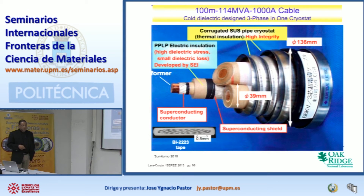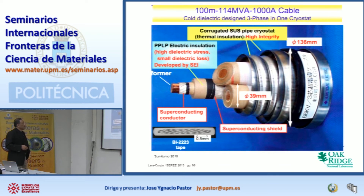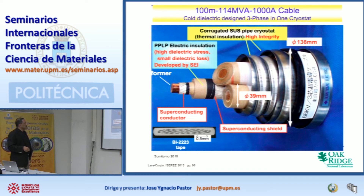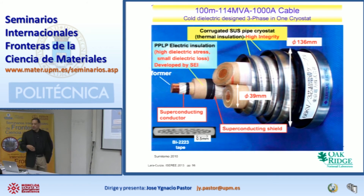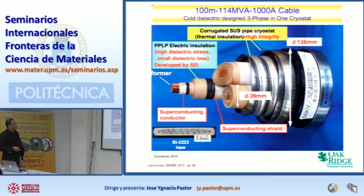Something I believe we will see in the near future is superconducting cables. In a superconducting cable cross-section, the superconducting phase is just a small volume fraction of the whole structure, and the challenge is making this structure reliable. Obviously you have to cool the superconductor, which is why the structure is so complex. I hope one day we will replace all these transmission lines with superconducting cables to reduce electrical losses and improve efficiency.